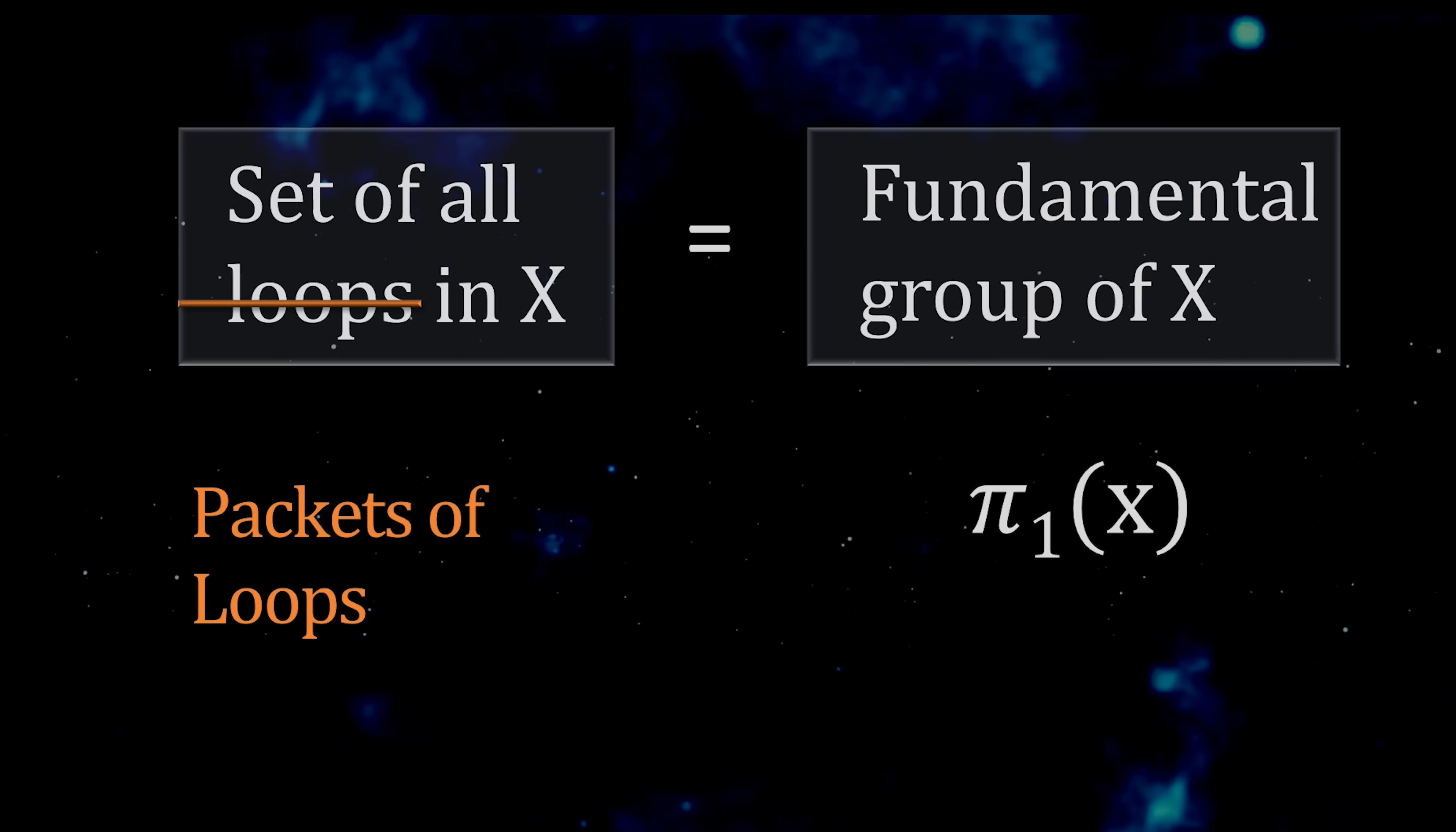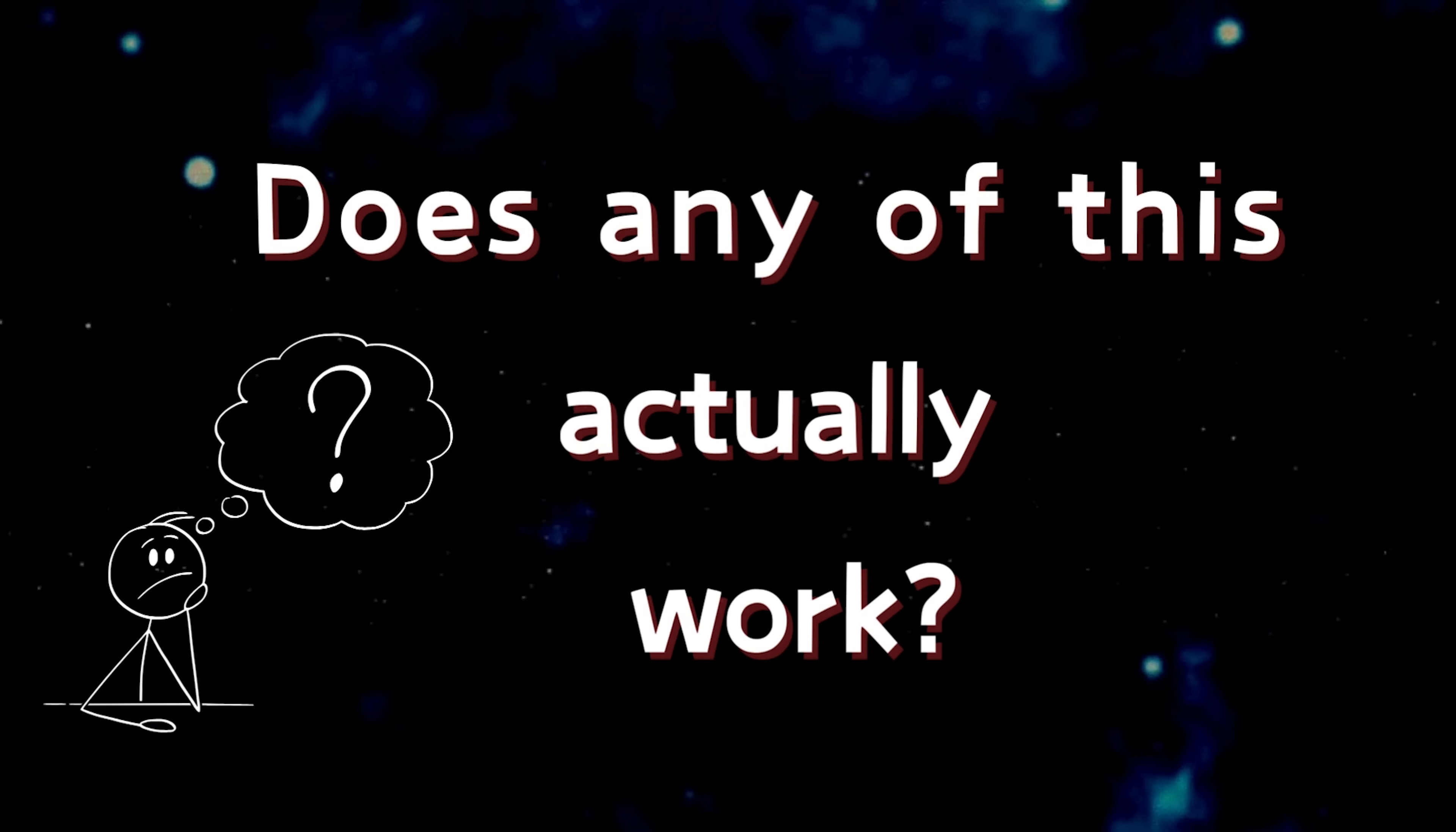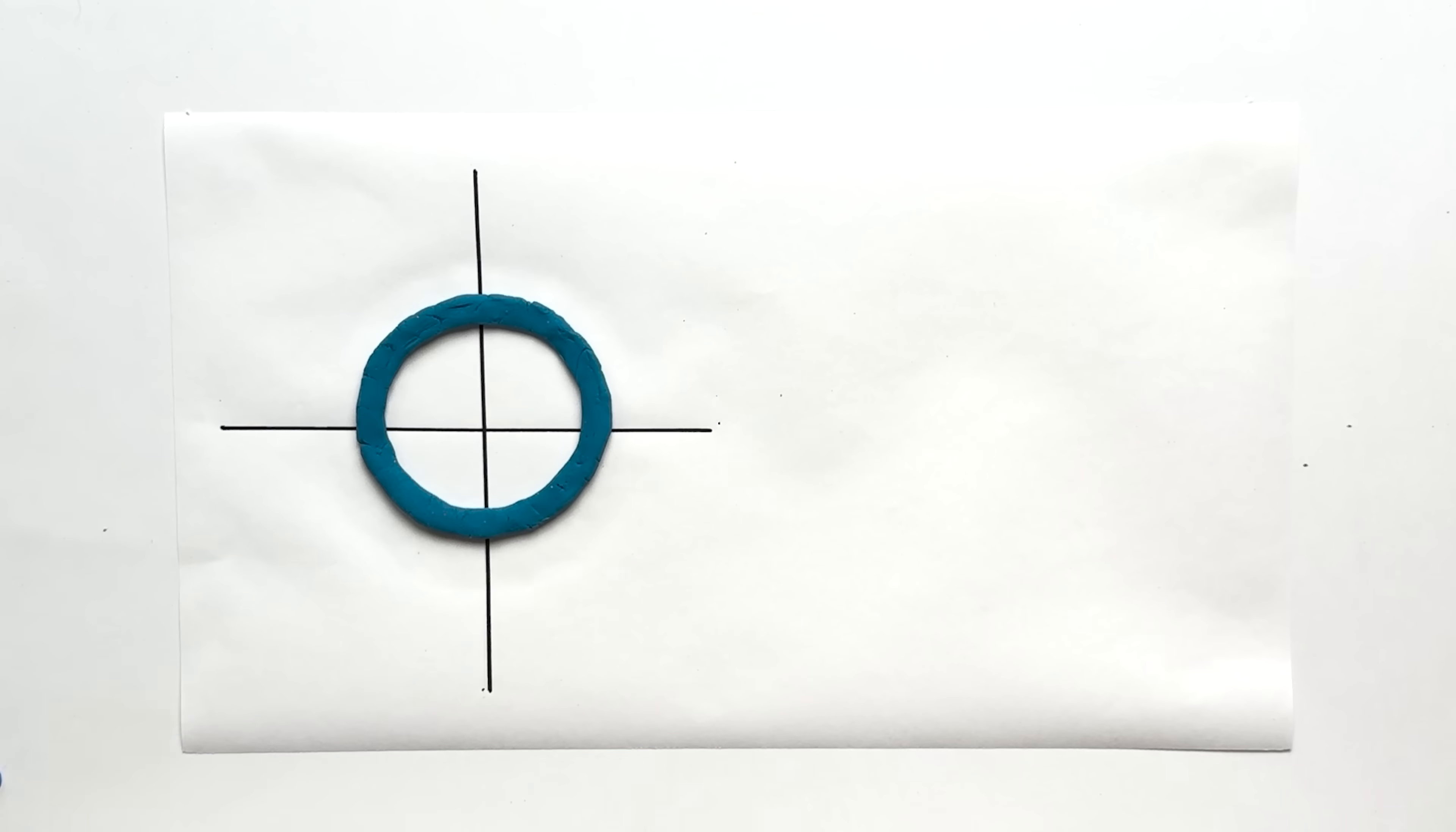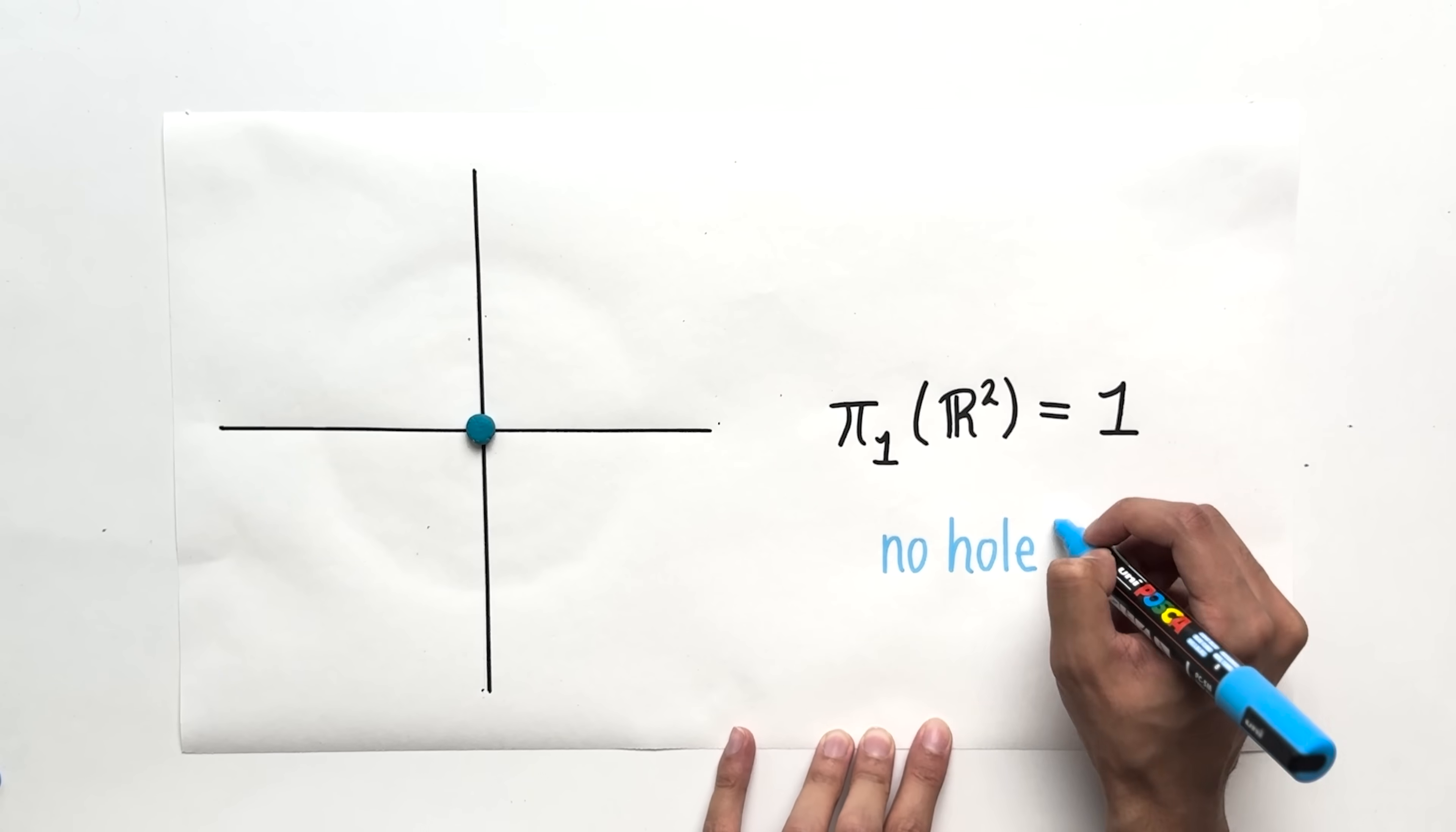So this is all fine and good, but we should ask, does any of this actually work? If you look at a concrete space with holes, can you actually calculate its fundamental group? The simplest space for which we can compute the fundamental group is the xy plane. Well, any loop in this space can be deformed into a point. So all loops in this space belong to the same packet. The fundamental group of this space therefore has one element. This means intuitively that this space has no holes.